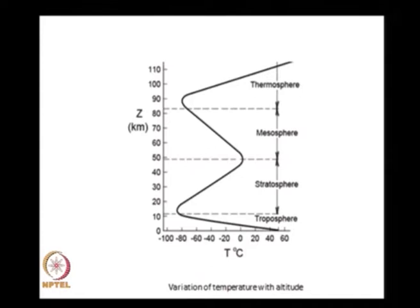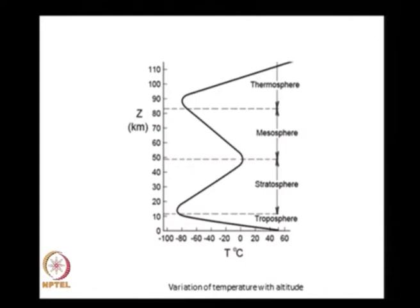We talked in terms of the temperature variations above the surface of the earth. The y-axis shows altitude and the temperature is shown on the x-axis. The earth gets heated by the sun, so the layer of air above the earth gets heated, and therefore the temperature drops from around 40 degrees centigrade at the surface to around minus 60 to 80 degrees centigrade at a height of around 10 kilometers — the altitude around which a jet aircraft flies.